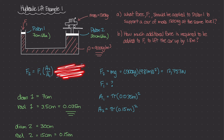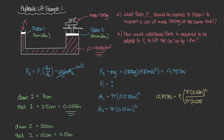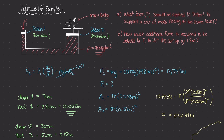With H equal to zero, the equation reduces to F2 = F1 × (A2/A1). So 12,753 newtons equals F1 times π*(0.15)² over π*(0.035)². The pi's cancel out, and plugging this into the calculator gives F1 equal to about 694.33 newtons. The ratio A2 over A1 comes out to about 18.37.